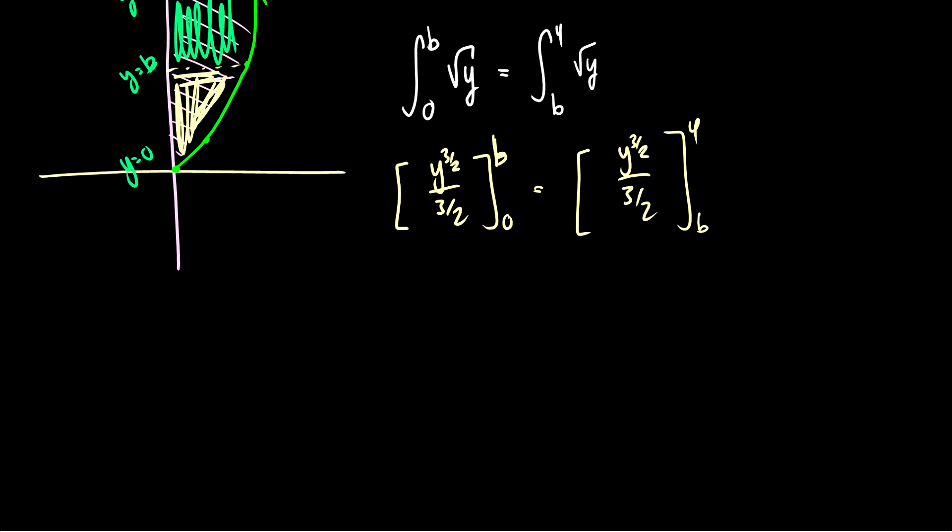Okay so let's just substitute in some numbers here. So if we put b in on the left we'll have b to the 3 halves over 3 halves is equal to, because if we put 0 in for y we'll just get 0. Okay so 4 to the 3 halves is 8 over 3 halves minus if we put in b for y we'll get b to the 3 halves over 3 halves.